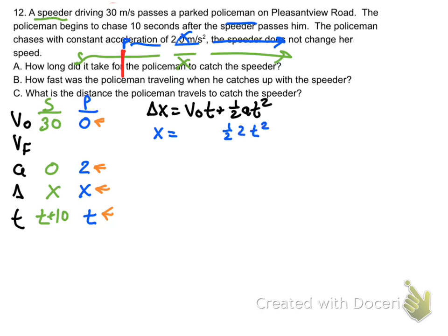We do the delta x equation for the police car. The police car's initial velocity is 0, so that term is not in this equation. And we do the equation for the speeder, where we have initial velocity times time. The speeder does not accelerate, so that term is not present.